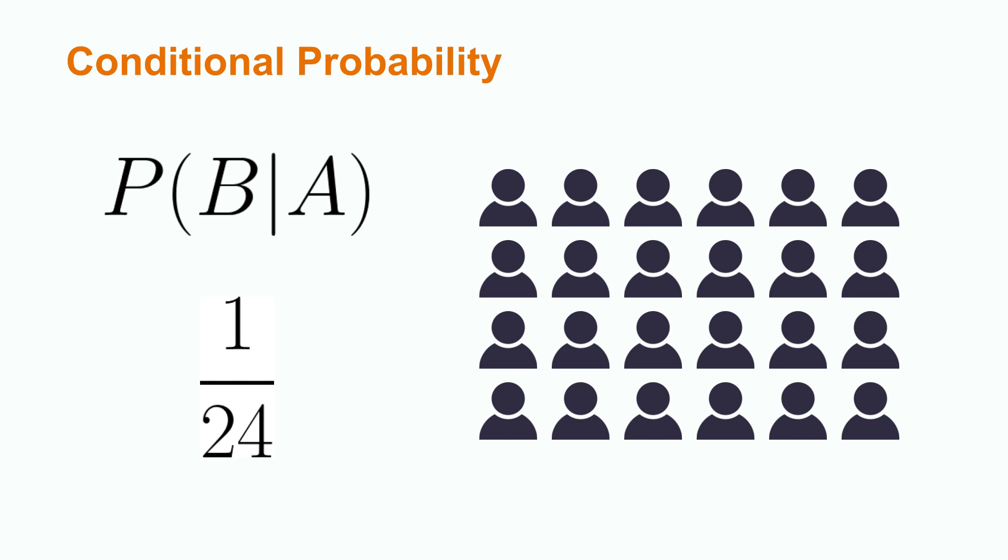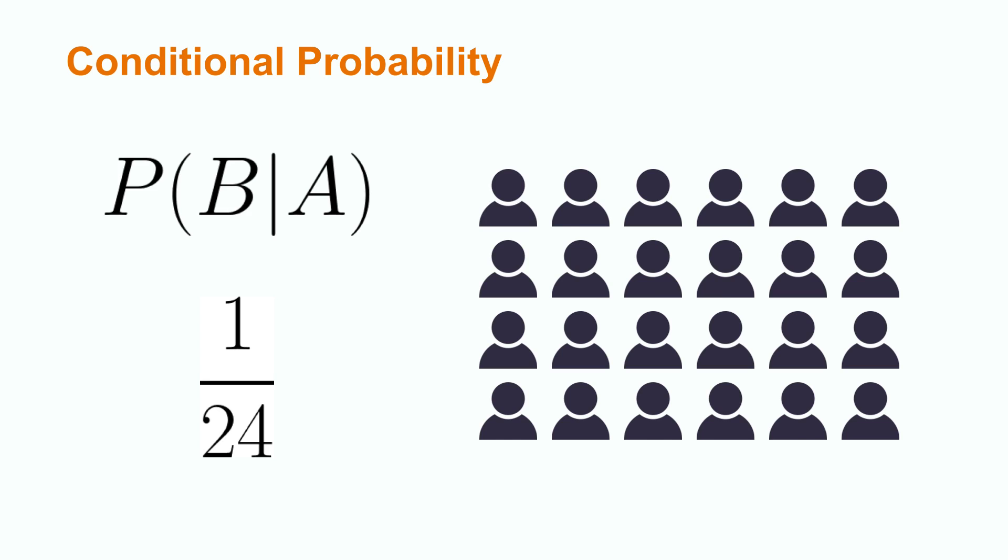However, as we ask more and more questions, fewer and fewer characters are left. For example, if there are 12 male and 12 female characters and we find out our opponent's character is female, we now have a 1 in 12 chance of guessing their character correctly. This example illustrates the concept of conditional probability.